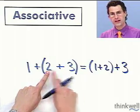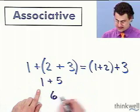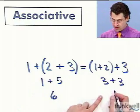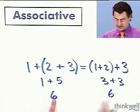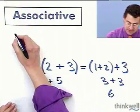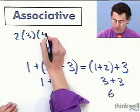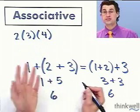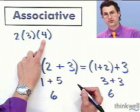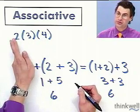Let's check: 2 plus 3 equals 5, and that gives 6. On the other side, 1 plus 2 equals 3, then 3 plus 3 also equals 6. Even though the intermediate step is different, all correct roads lead to the correct answer. This is also true with multiplication: 2 times 3 times 4 — it doesn't matter the order. 2 times 3 is 6, times 4 is 24. Or 3 times 4 is 12, times 2 is 24. Same answer.